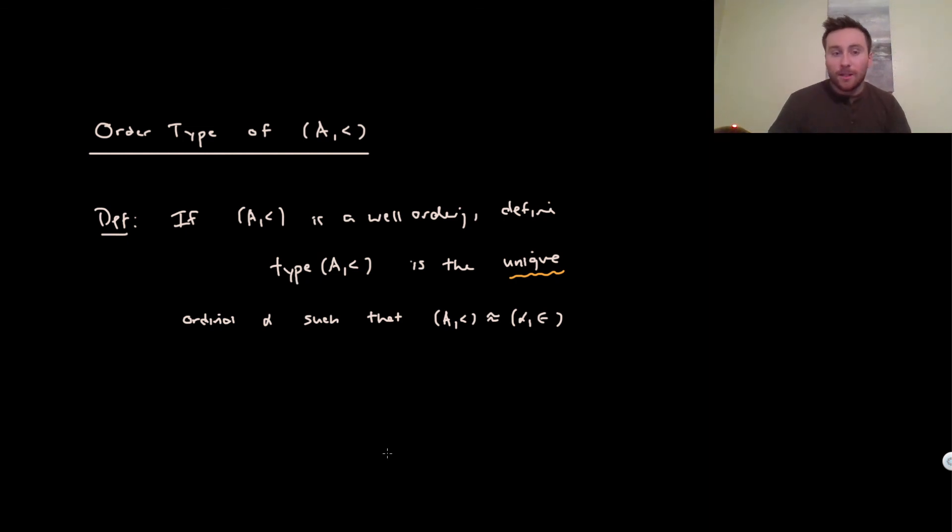And what we're going to do is show something a bit stronger in a few videos—that if we have any set, then it's actually well-orderable. So it's kind of related to this. That's actually equivalent to the axiom of choice, and we'll probably prove that equivalence just for fun.